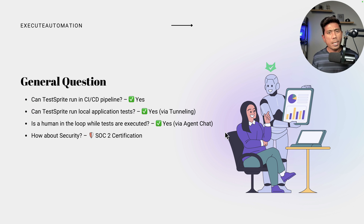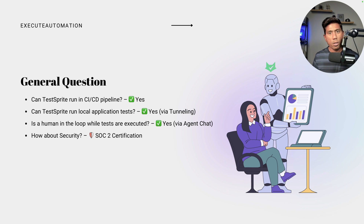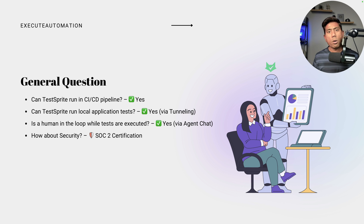Some common questions: Can Test Sprite run in a CI/CD pipeline? Yes — you can export the generated test code and even check it into GitHub directly. Can Test Sprite run local application testing? Yes — even though it runs on the cloud, you can still test local applications using the tunneling option. Is there a human in the loop during test execution? Yes — you can use the agent chat to control execution, add more test cases, or enhance testing. You are still in the loop; the AI doesn't take over everything.